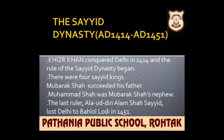The next one is Muhammad Shah. Muhammad Shah was Mubarak Shah's nephew. During his reign the nobles became very powerful. And after this, the last ruler, Alam Shah, lost Delhi to Bhelol Lodhi in 1451, with this the rule of the Sayyid dynasty came to an end.